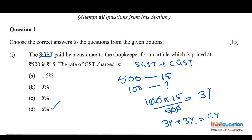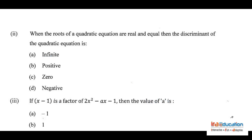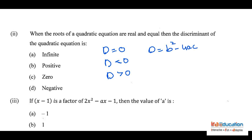In the second problem, we need the value of the discriminant when roots are real and equal. If D equals 0, roots are real and equal; if D is less than 0, roots are imaginary; if D is greater than 0, roots are real and unequal. D is B squared minus 4AC for a quadratic equation AX squared plus BX plus C equals 0. For real and equal roots, D must equal 0, so the answer is option C.